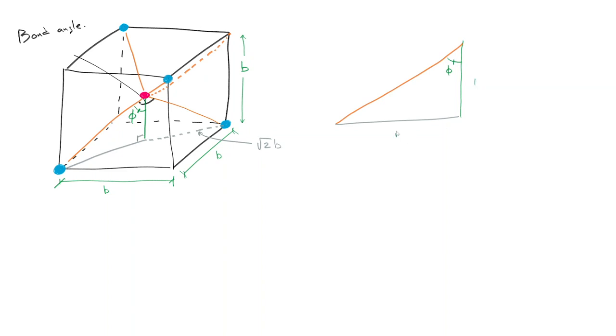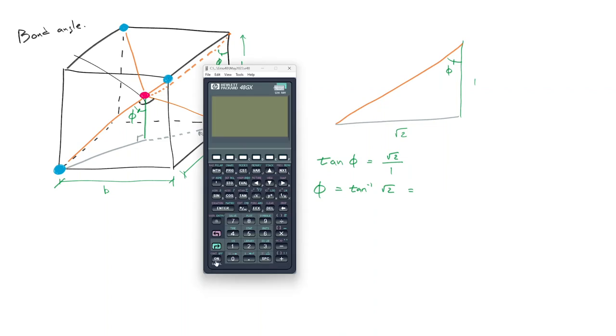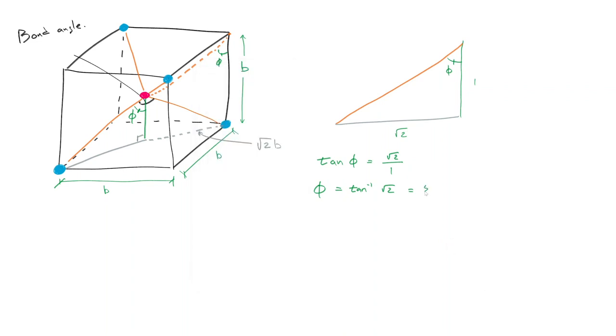This angle would be phi as well. That's almost all we need. With that knowledge of those edges, we can say tan phi equals root 2 over 1. So phi is arctan of root 2, which equals 54.7 degrees.